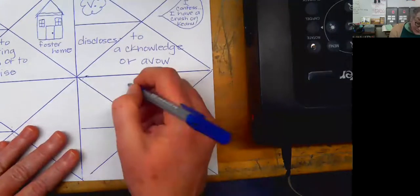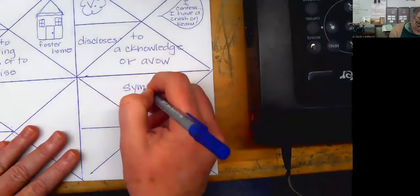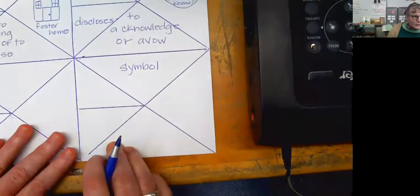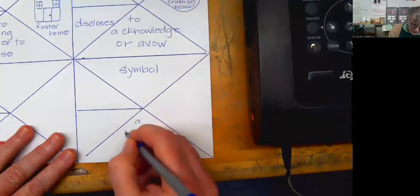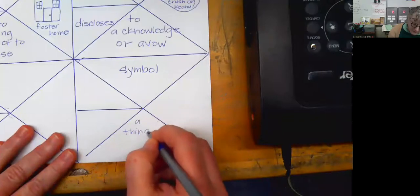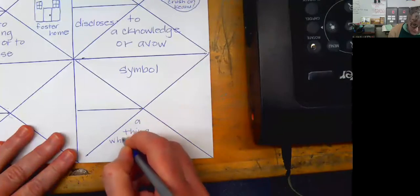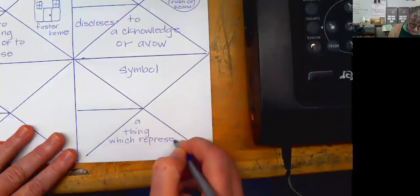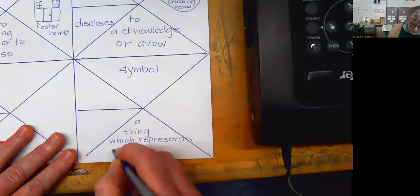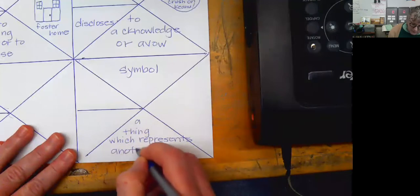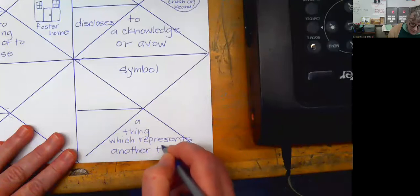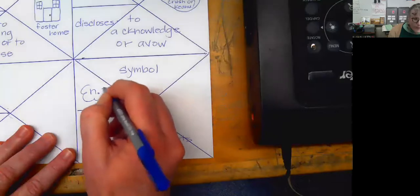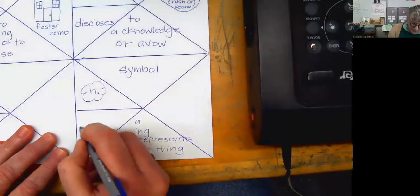Third word is symbol. So a symbol is a thing which represents another thing. And it's a noun. And emblem is our synonym.